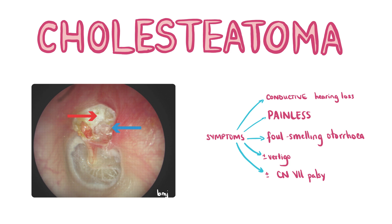Cholesteatoma is a non-cancerous growth of squamous epithelium behind the attic of the tympanic membrane. Patients present with conductive hearing loss, foul-smelling persistent otorrhea, and possibly vertigo or facial nerve palsy. They will not complain of any pain. On otoscopy there will be a brown irregular mass at the upper attic of the tympanic membrane. It is a surgical emergency as it invades surrounding tissue and bone like the mastoid bone, and there is a high rate of recurrence.